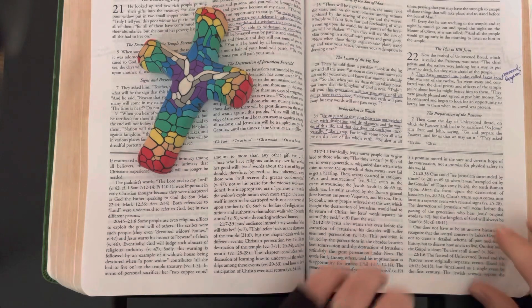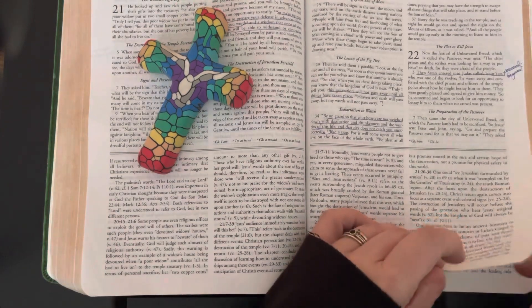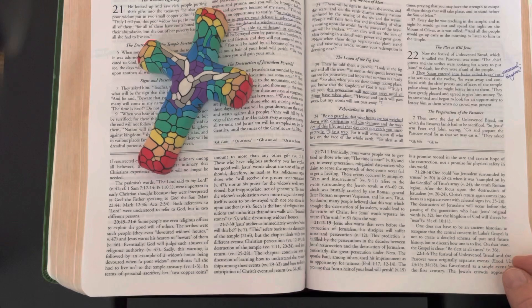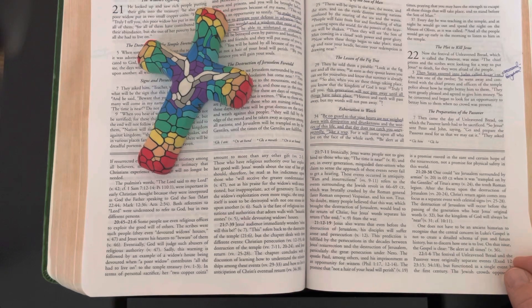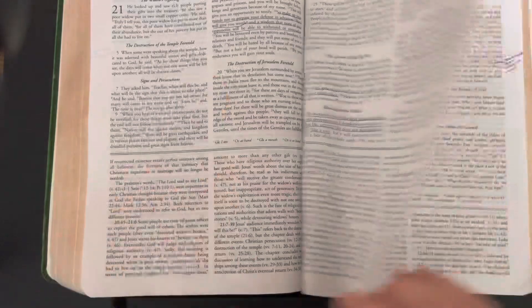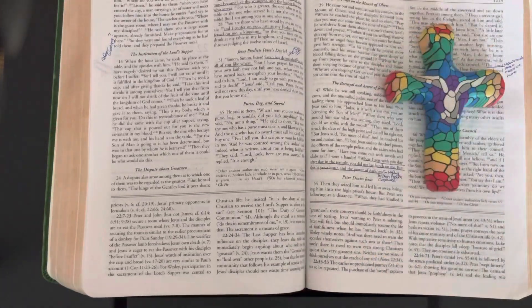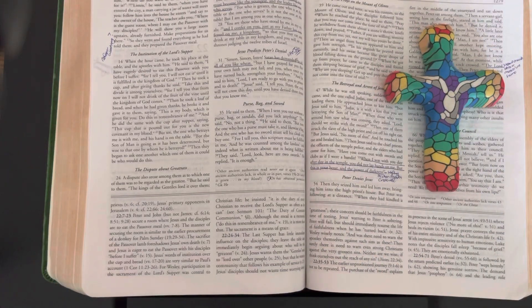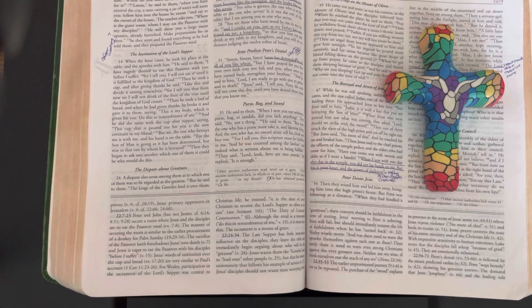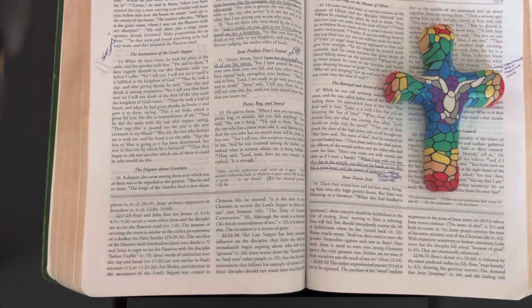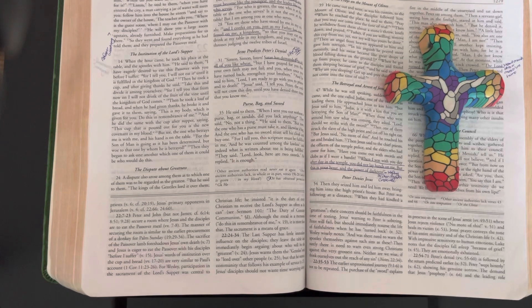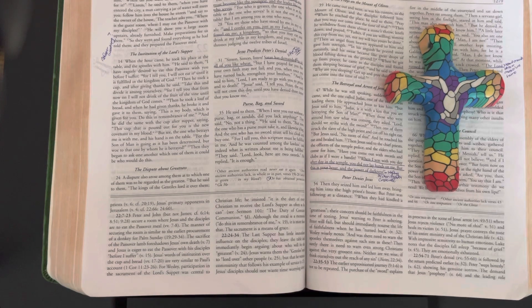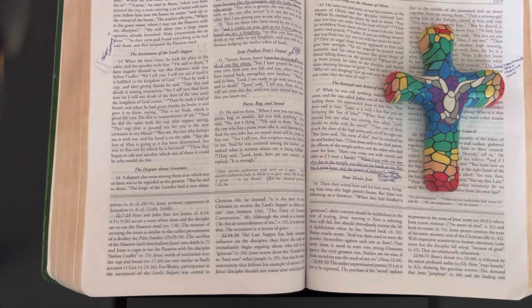Then came the day of unleavened bread on which the Passover lamb had to be sacrificed. So Jesus sent Peter and John saying, "Go and prepare the Passover meal for us that we may eat it." They asked, "Where do you want us to make preparations for it?" He said to them, "When you have entered the city, a man carrying a jar of water will meet you. Follow him into the house he enters."